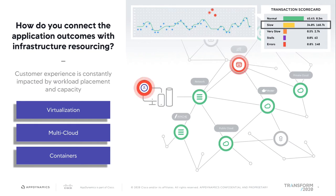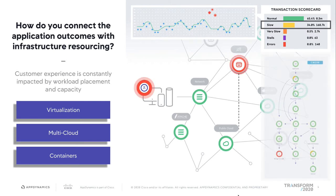Customer experience is constantly impacted by workload placement and capacity. We see virtualization, multi-cloud environments, and containers all being deployed on the back-end, creating complexity that makes it very difficult to correlate what's happening with application outcomes and infrastructure resourcing. Here at AppDynamics and Cisco, we've produced an integration called Cisco Workload Optimization Manager, or CWOM, in which we're able to start with the application and see — based on virtual machines, data centers, storage, modules, and the network — a full end-to-end topology, and see when transactions are being slowed down before they become errors in your back-end environment.